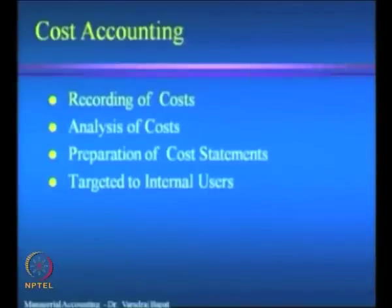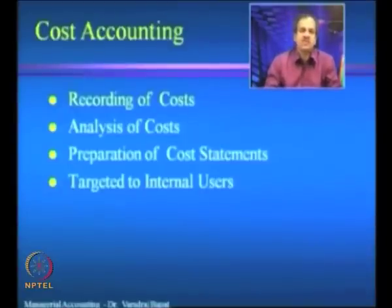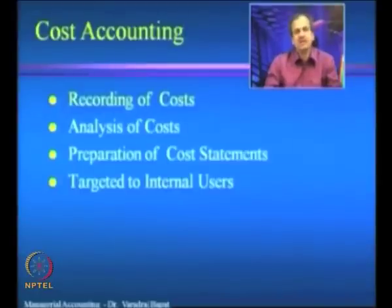The second is cost accounting. In cost accounting, there are four activities: first, to record the cost; second, analysis of the cost; third, preparation of cost statements; and the target of cost accounting is mainly internal users. Recording of cost is shown in a different color because it is mainly covered by recording of financial transactions — there is no need to record the cost again, as it would lead to duplication of work. The second activity, analysis of the cost, is very important because financial accounting may give you the ultimate financial results, but it may not give you the detailed breakup of cost.